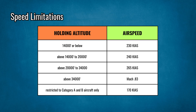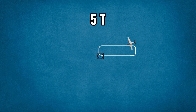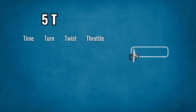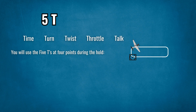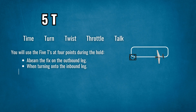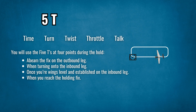Once you have figured out the appropriate entry, you must focus on holding. Aviators use the five T's to help them track what they should do in the hold: time, turn, twist, throttle, and talk. You will use the five T's at four points during the hold: abeam the fix on the outbound leg, when turning onto the inbound leg, once your wings level and established on the inbound leg, and when you reach the holding fix.